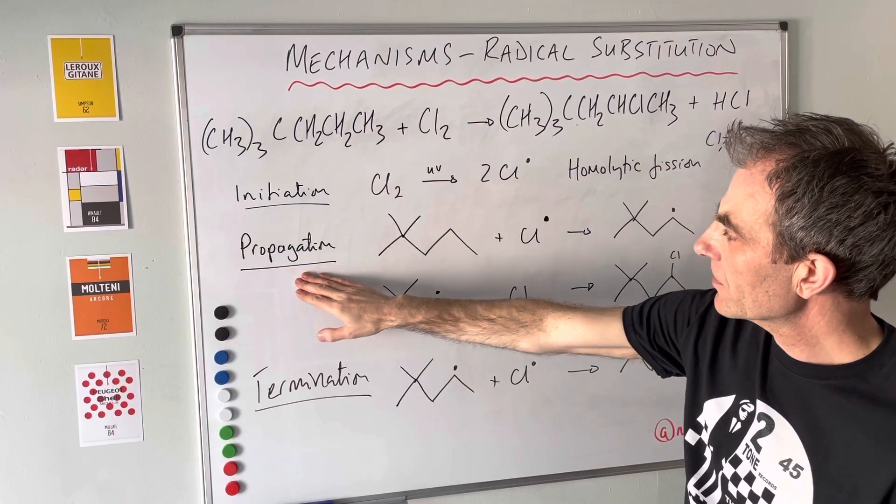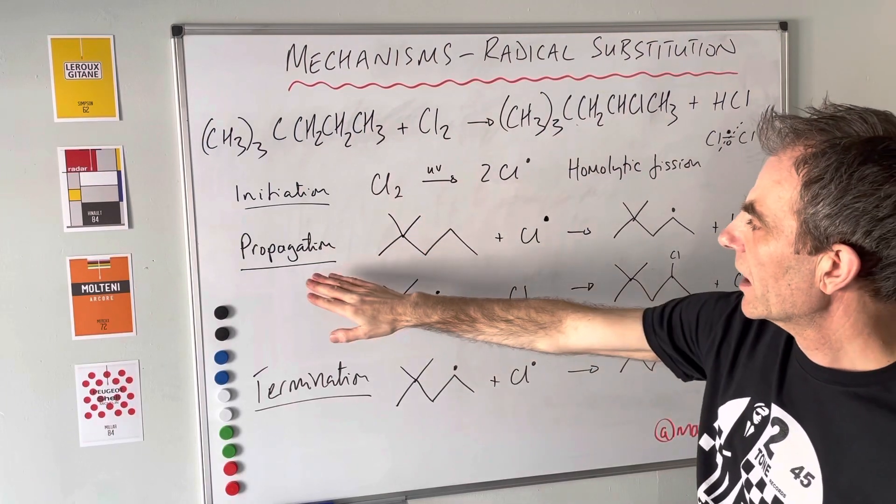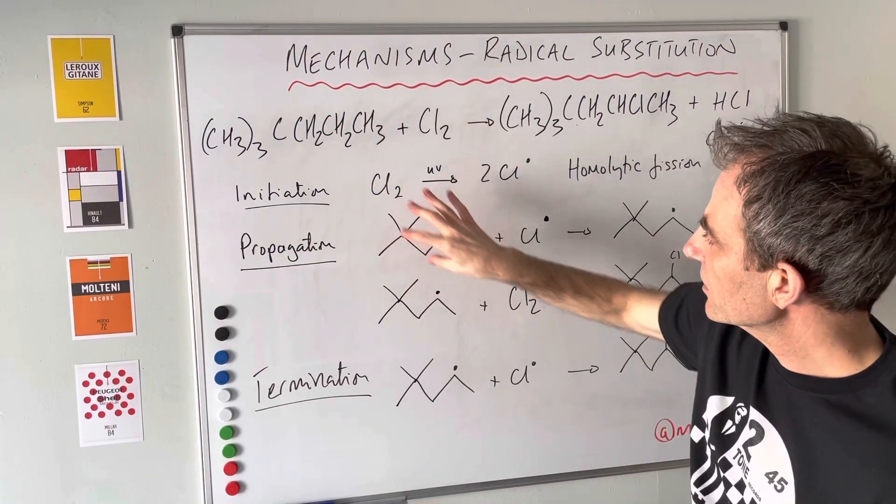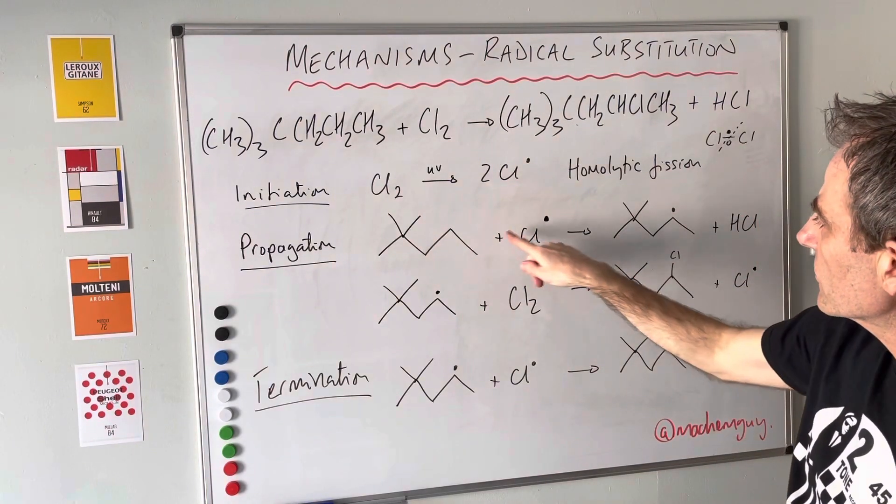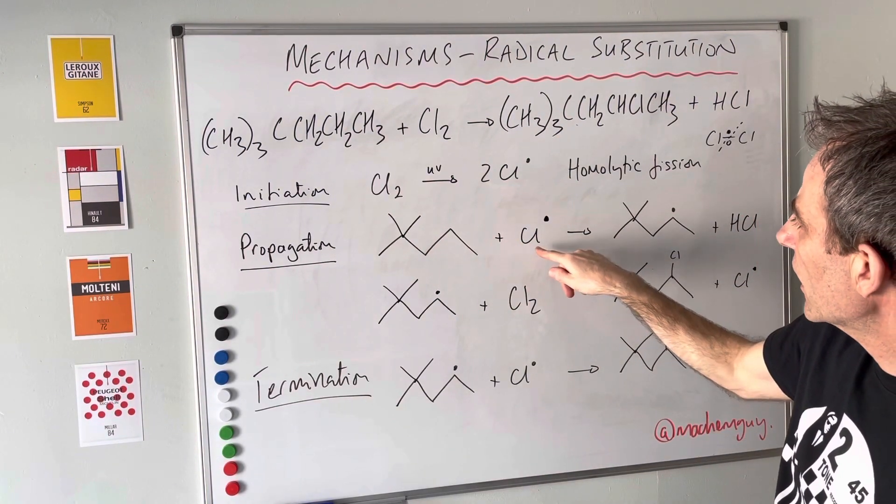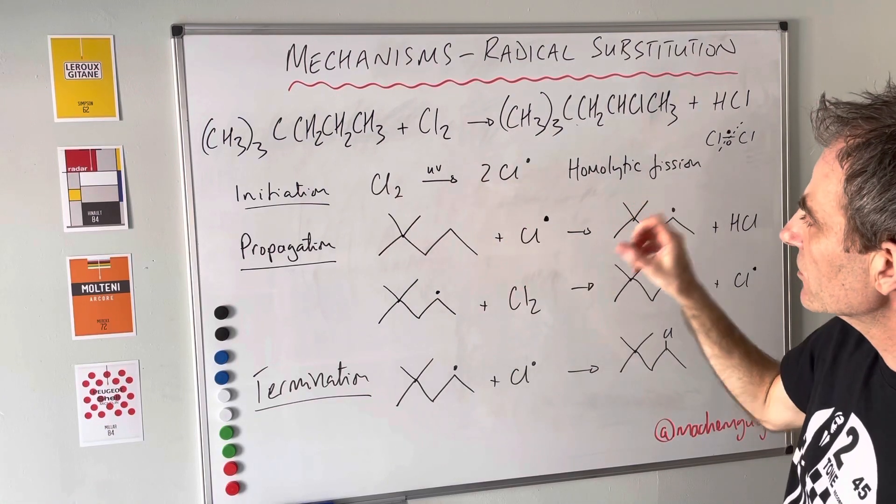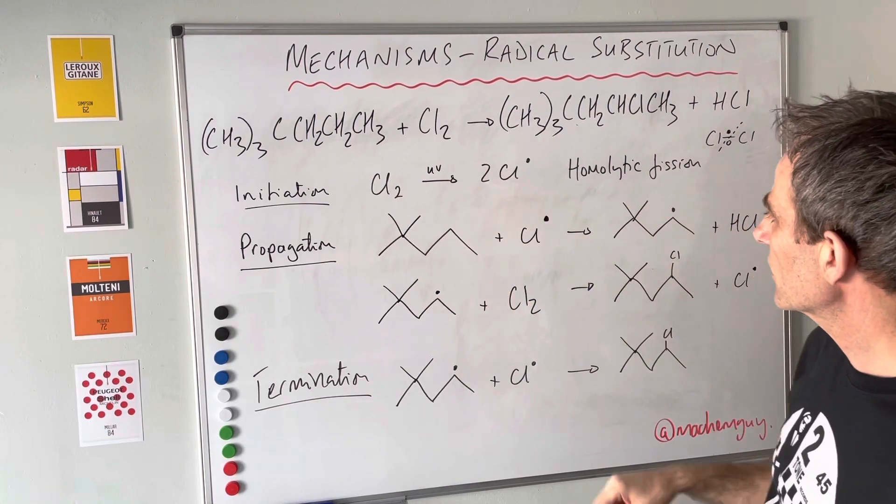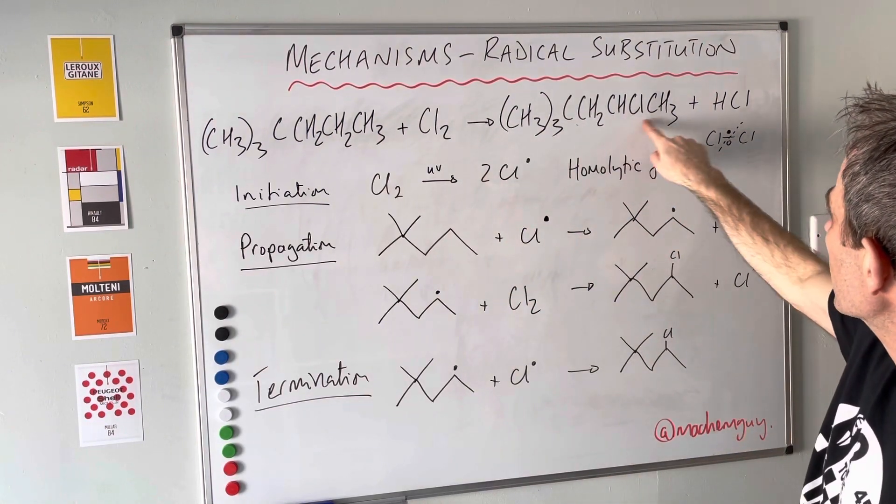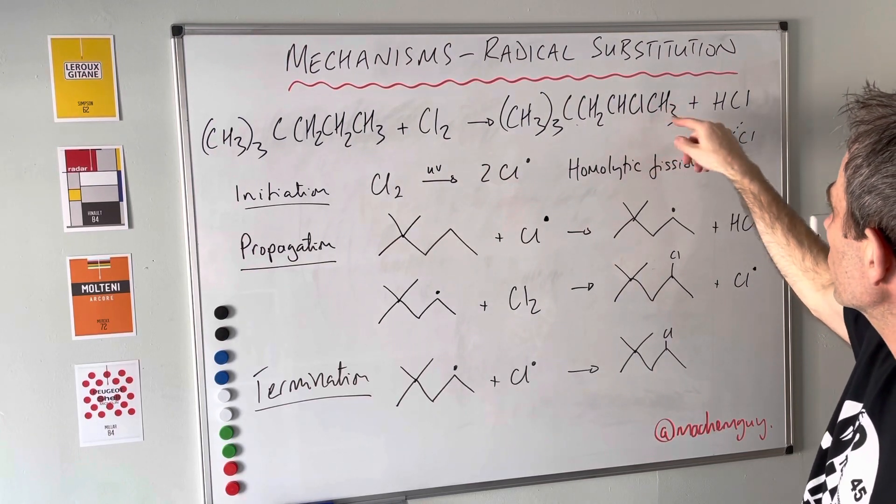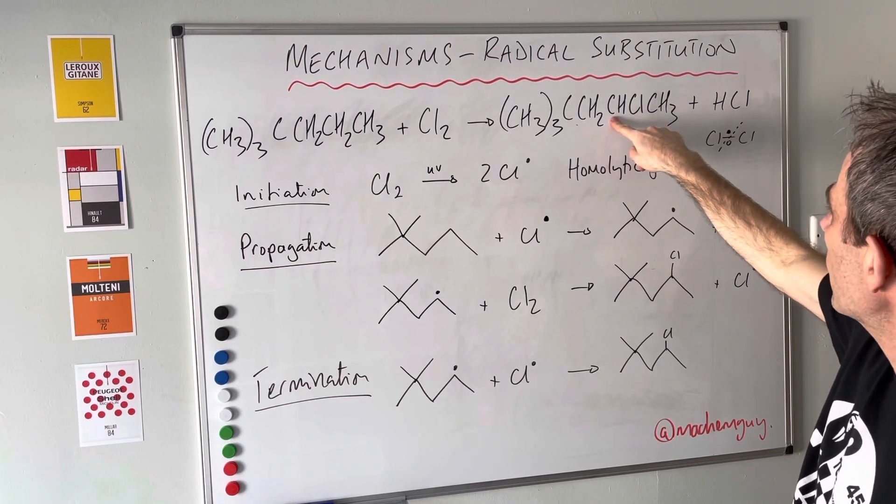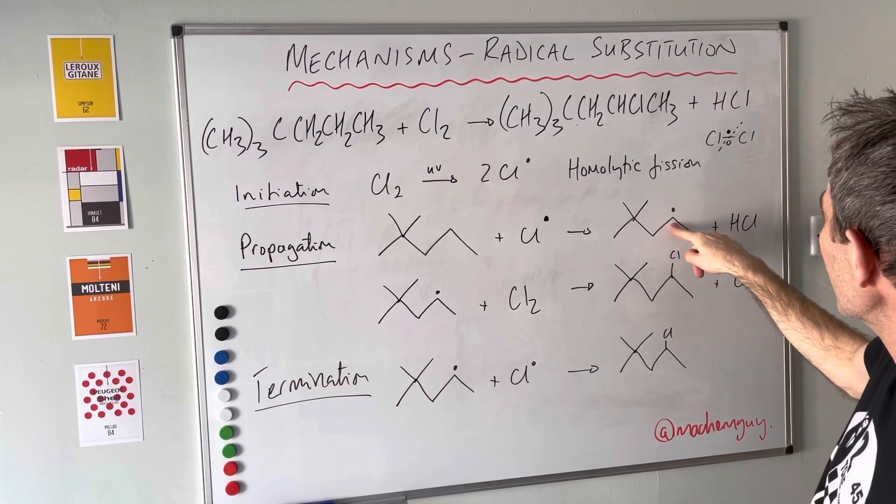Now we go to the propagation steps. There's always two of these. Here's the alkane in skeletal formula, and it's going to be attacked by this chlorine radical. The chlorine radical takes a hydrogen and the electron with it. Look at where the chlorine is in the final product—it's the second carbon in from the right-hand side, here.